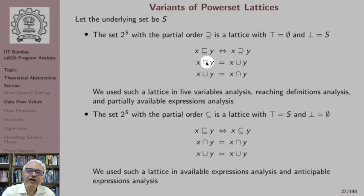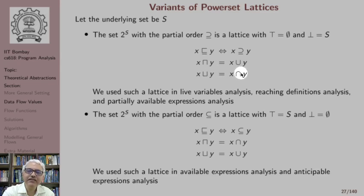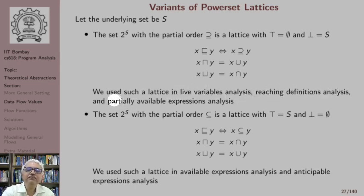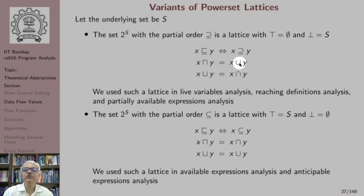In this lattice, x meet y, the greatest lower bound, is computed by taking the union of x and y. Similarly, x join y is computed by taking the intersection of x and y. We have used such a lattice in live variables analysis, reaching definitions analysis, and partially available expressions analysis. Note that we didn't need the join operation — we only used the meet operation, which was union.